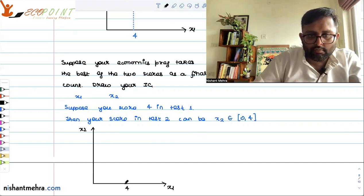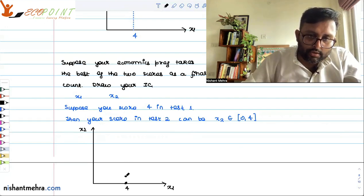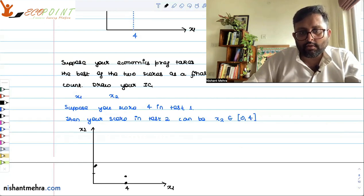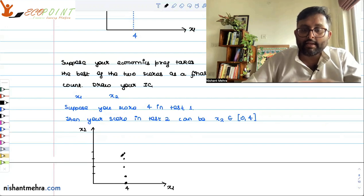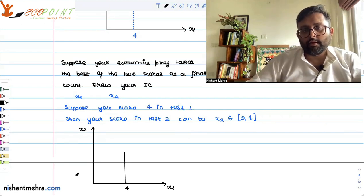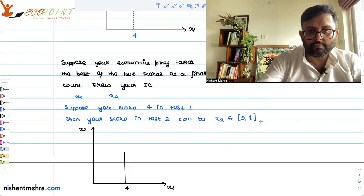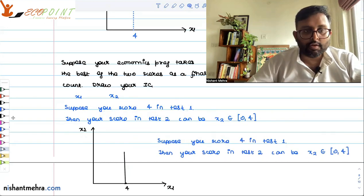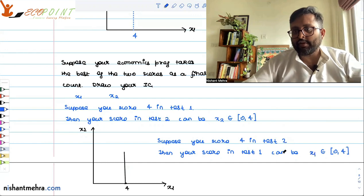I score 4 in test 1 and 0 in test 2: the professor takes my score as 4. I score 4 in test 1 and 1 in test 2, 2 in test 2, 3 in test 2, 4 in test 2 — at all of these points the professor is taking my best score. Similarly, if you score 4 in test 2, your score in test 1 could be anything between 0 and 4.